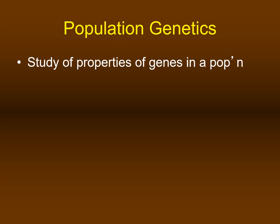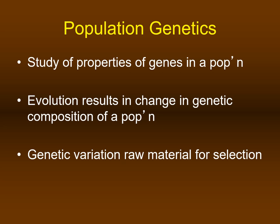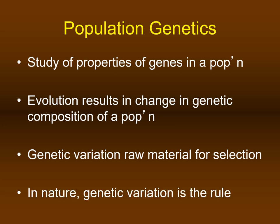The subject of population genetics is to study the behavior of genes within the population, not within the individual. Evolution inevitably results in the change in the genetic composition of a population, and that genetic variation is the raw material for natural selection. In populations that exist in nature — not the product of artificial selection by humans — genetic variation is a rule.